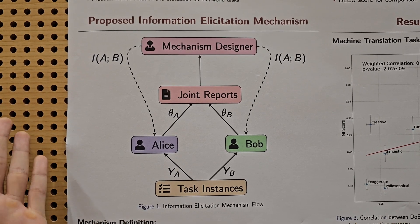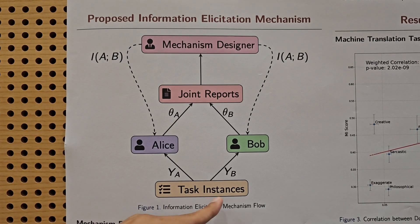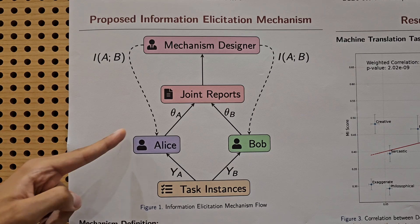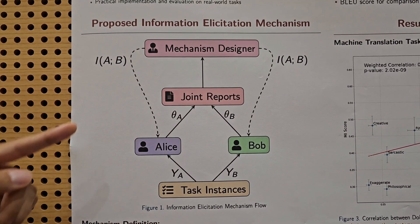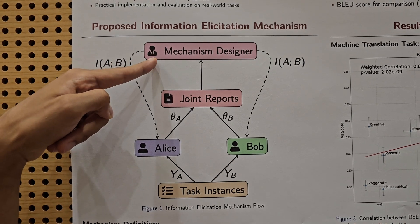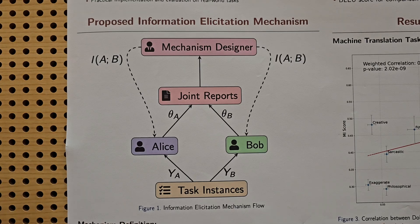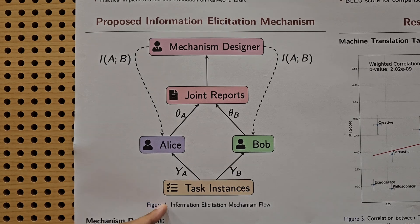For instance, an application of this is in the context of paper reviewing where the task would be a paper and then Alice and Bob are reviewers. They strategize about how to review the paper optimally. Our mechanism designer in that context would be evaluating the quality of the reviews even without ground truth. In this context that would mean the mechanism designer wouldn't necessarily have to read the paper.